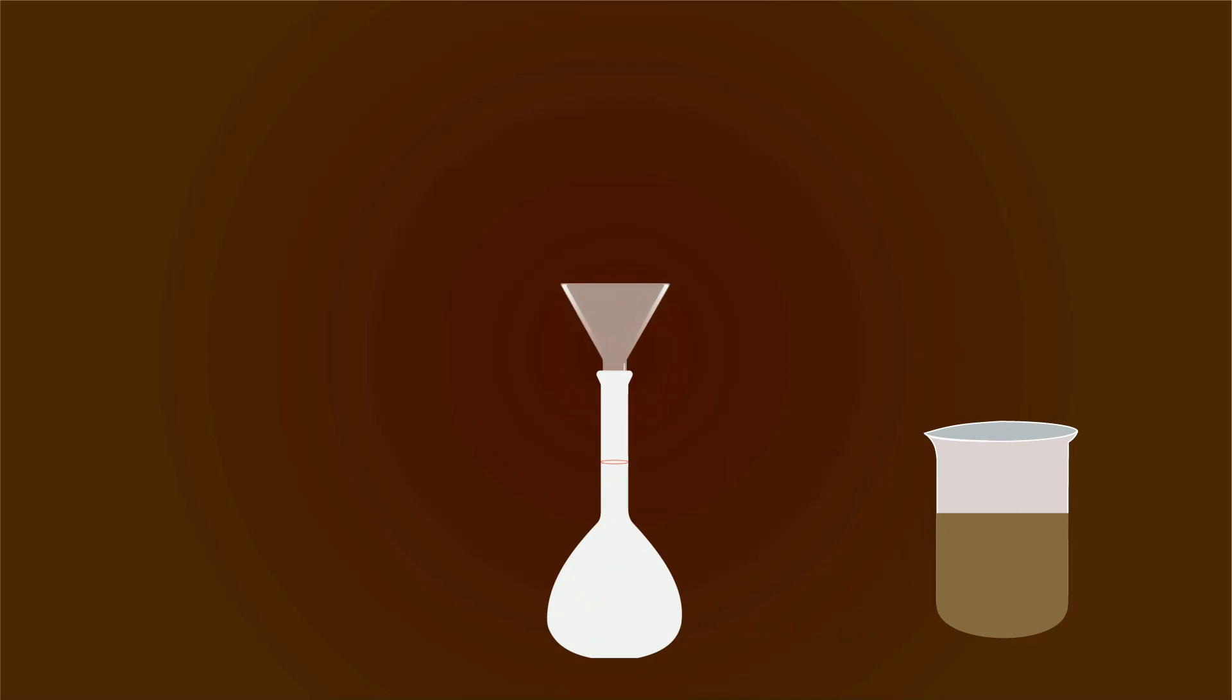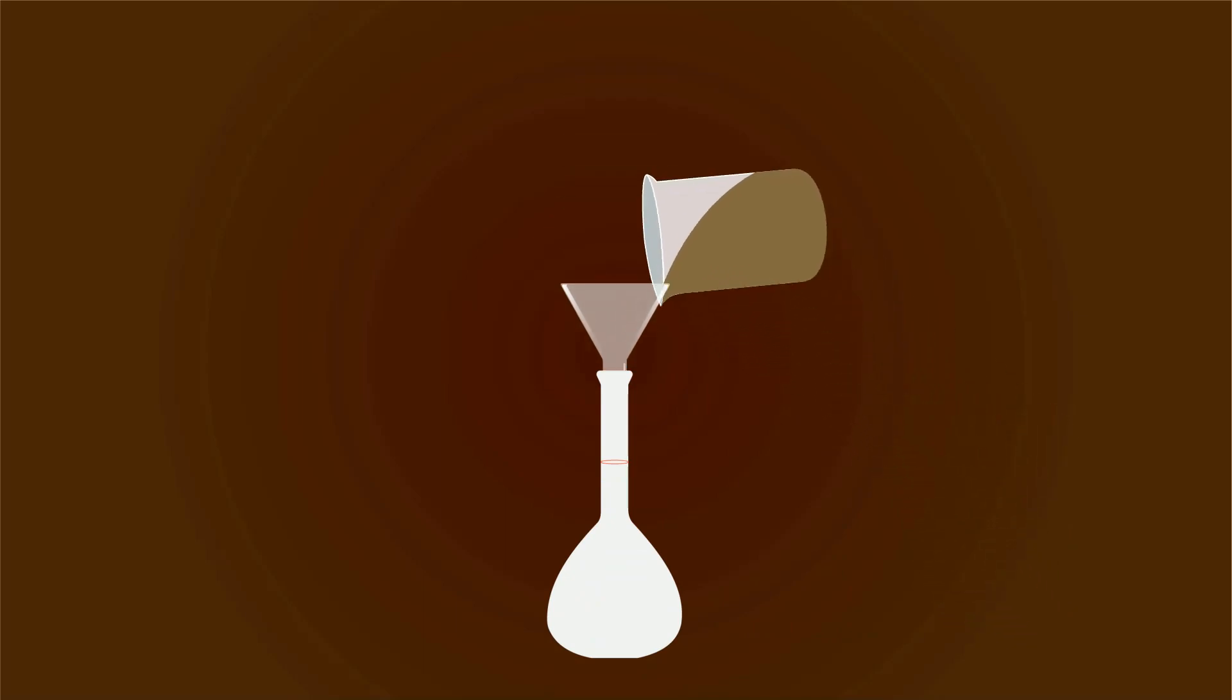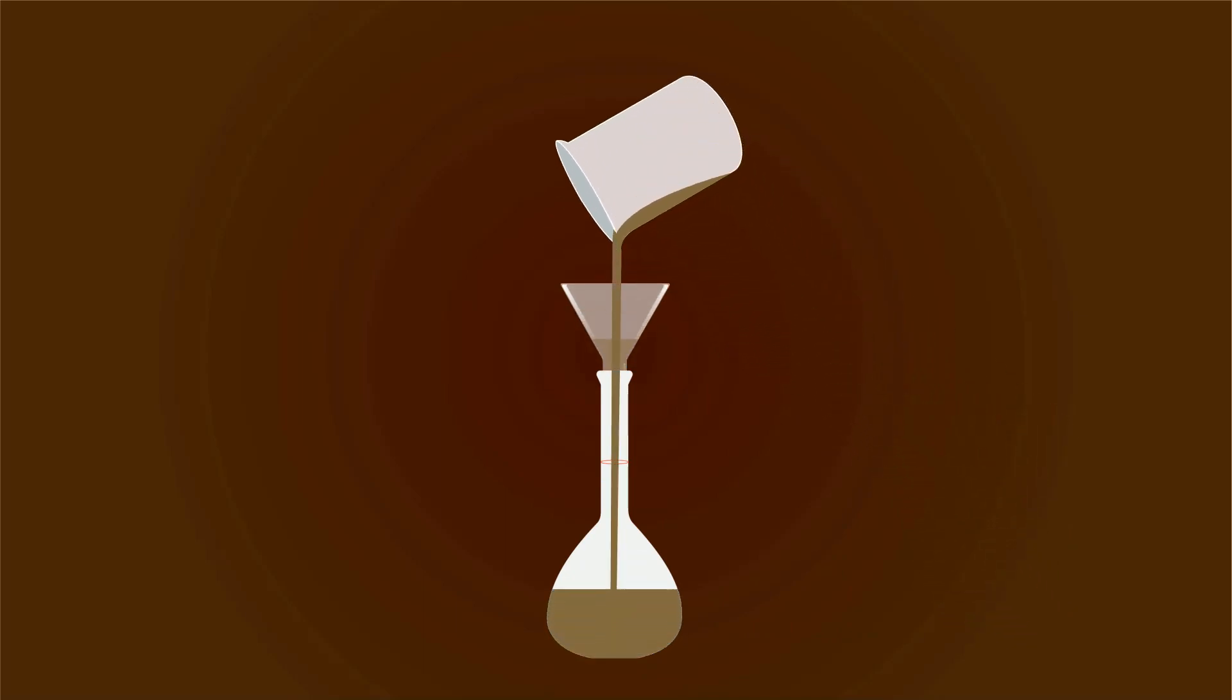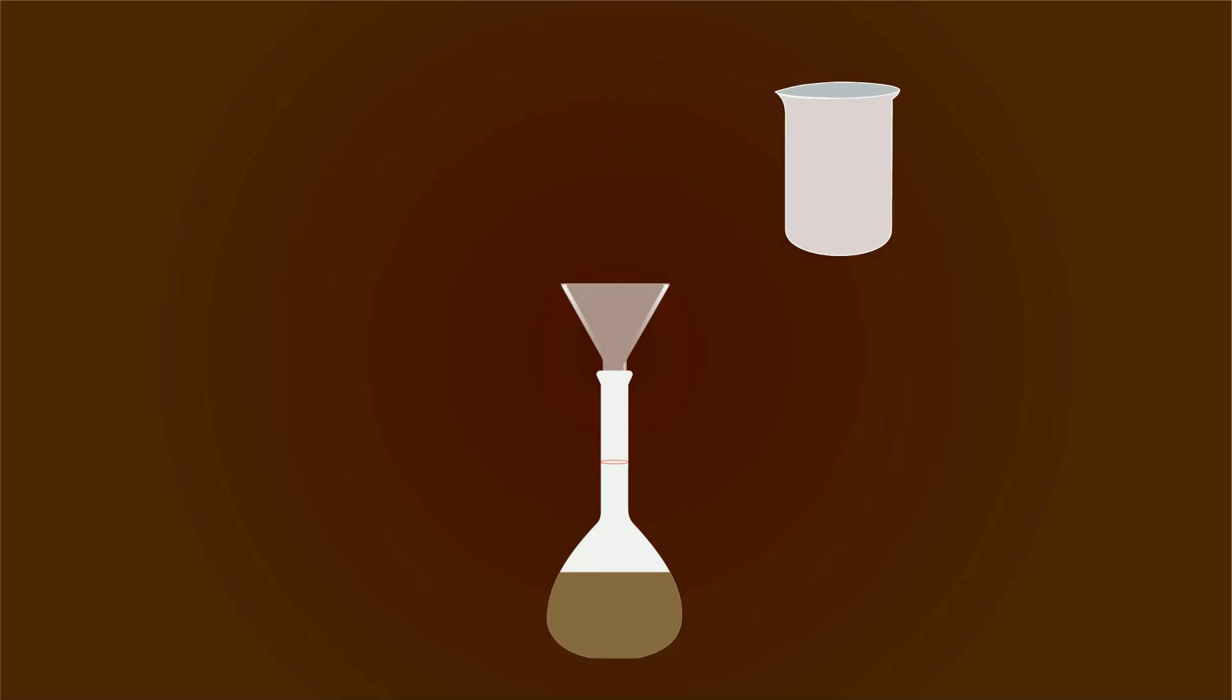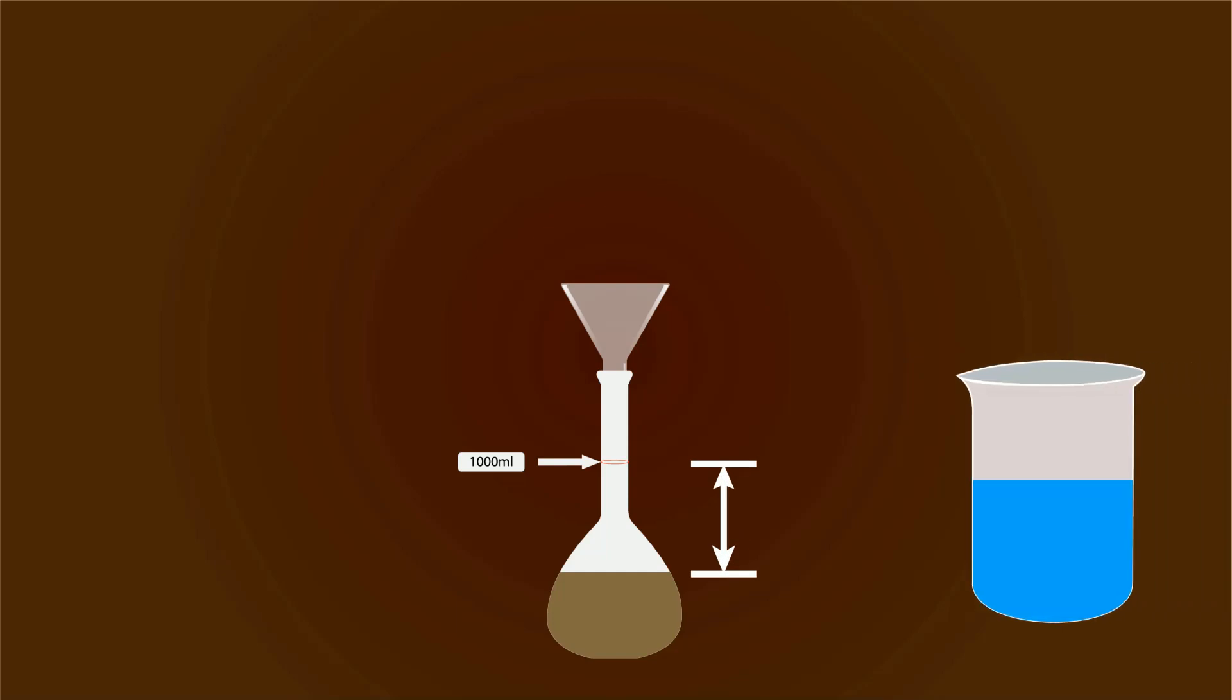Now add this mixture into the 1000 milliliters volumetric flask with the help of a funnel. You can clearly see the 1000 milliliters point. To get 0.1 molar we have to fill it with more distilled water up to the 1000 milliliters point.